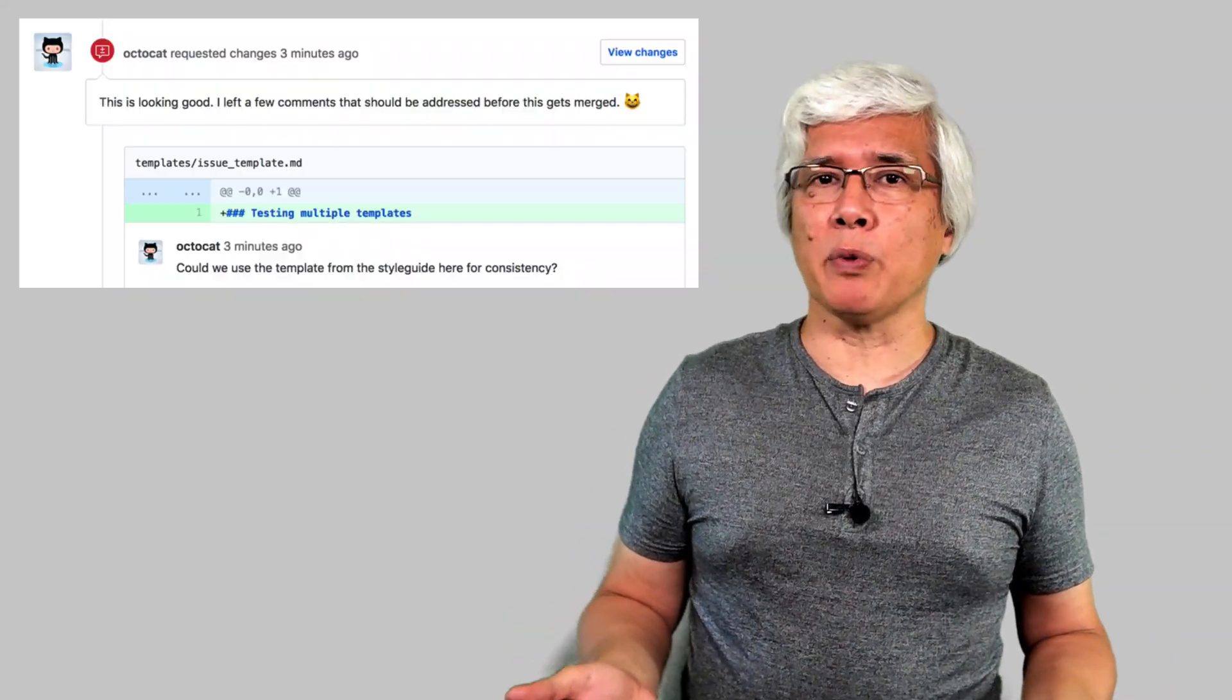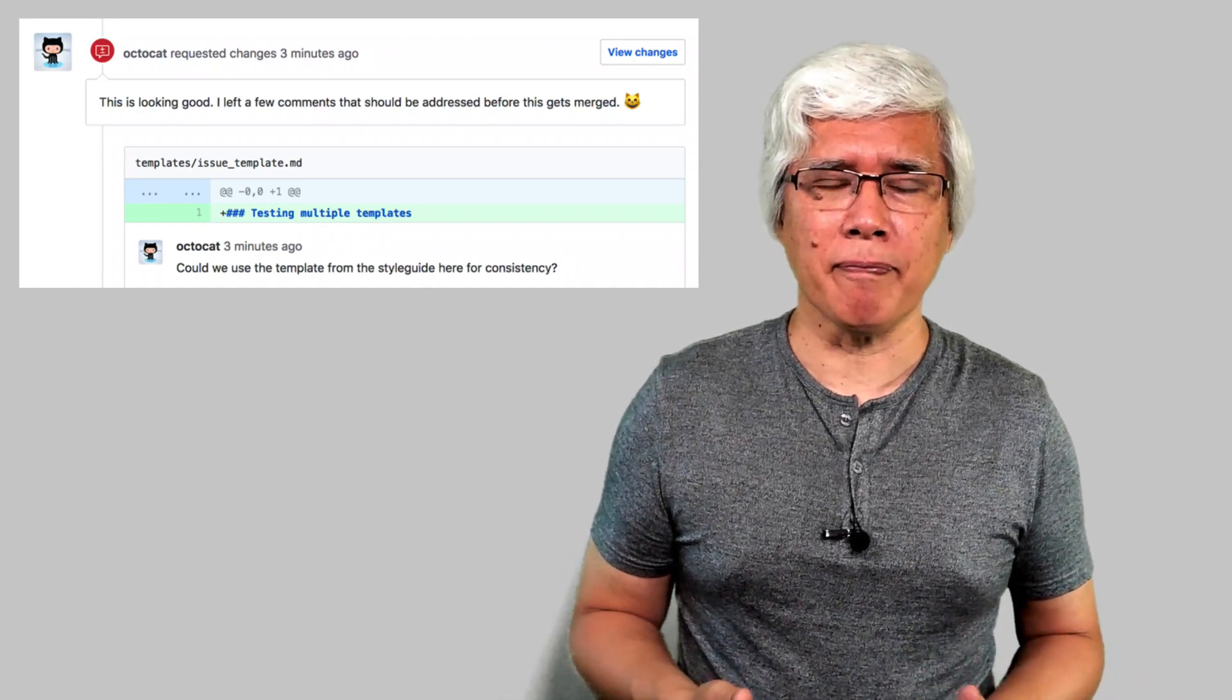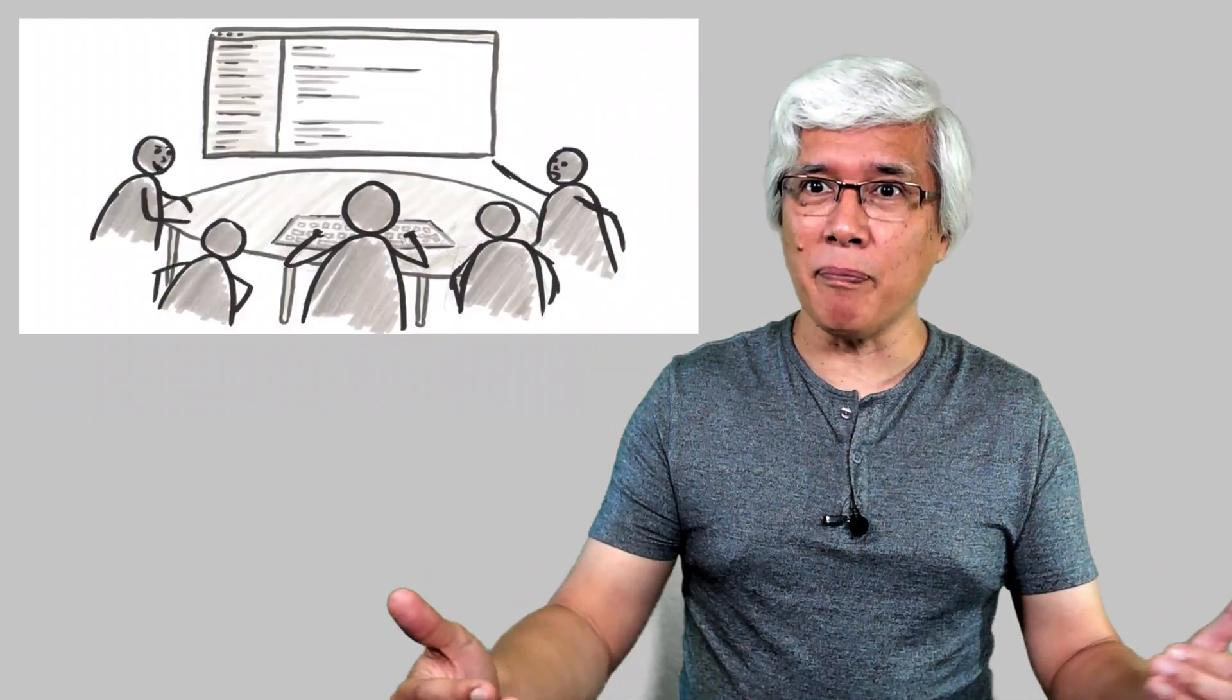So, take something like code reviews. Nowadays, that happens in pull requests. What is a code review taken to an extreme? It's pair programming. And lately, folks have taken pair programming itself to a new extreme of mob programming.